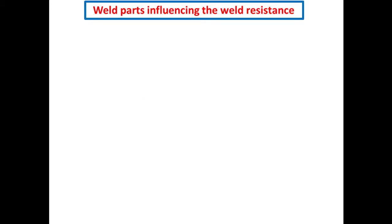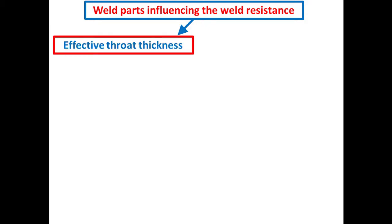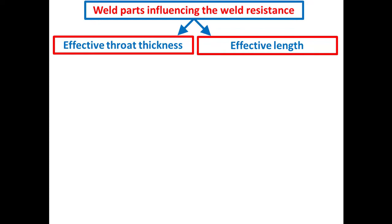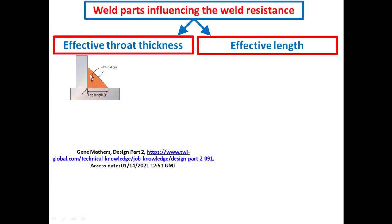It is to note also that there are two principal weld parts that considerably influence the weld resistance. The first one is the effective throat thickness, and the second one is the effective length. The effective throat thickness is determined as the distance between the root of the weld and the surface of the weld. This is valid for the case of mitre fillet weld.